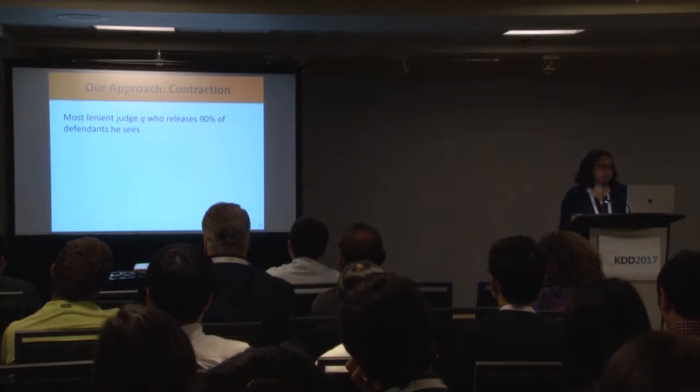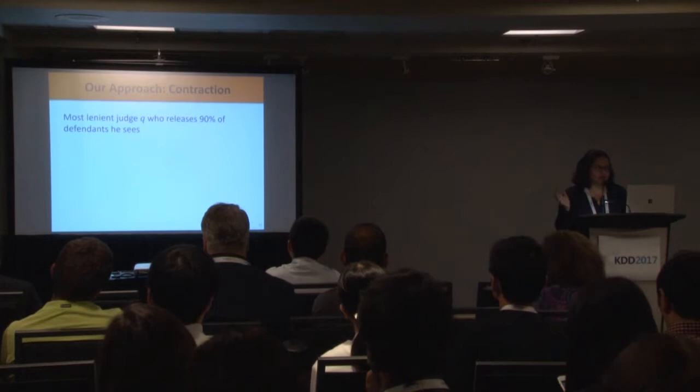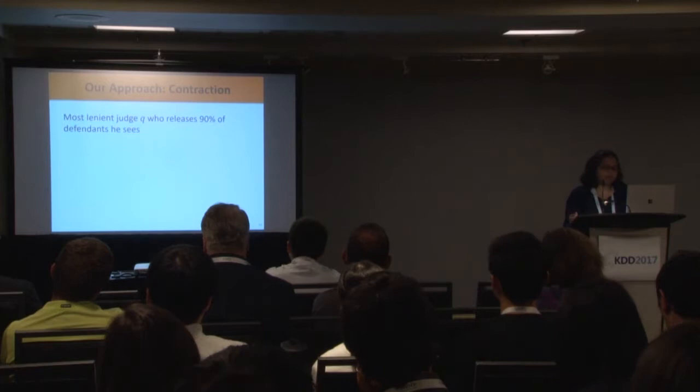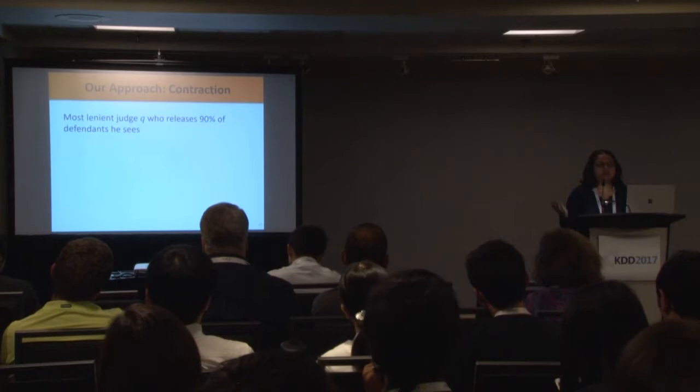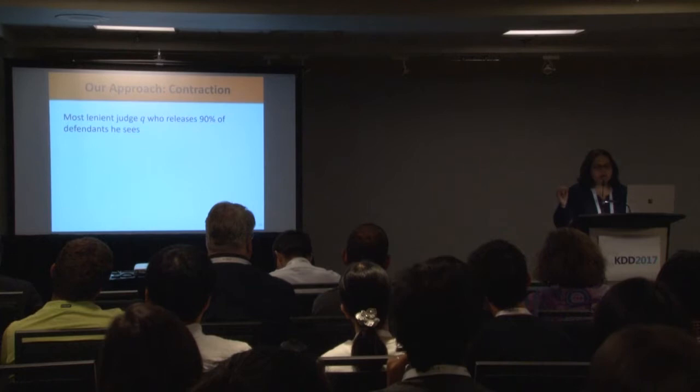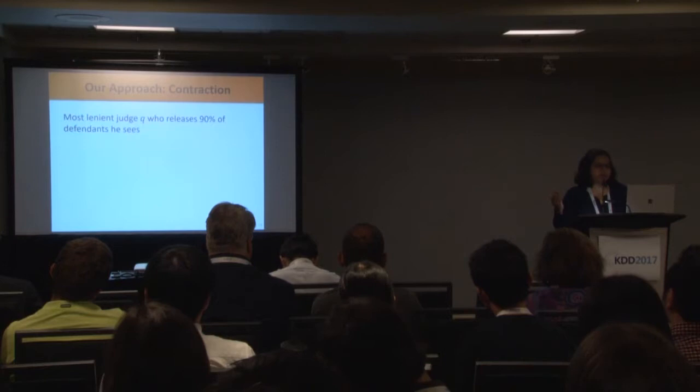For this, we propose an approach called contraction. This approach is simple and elegant, and also addresses the subtle challenges I talked about. We look at the most lenient judge — the person who releases the highest fraction of defendants. This already pushes the selective labels problem further, because this person has a dataset that is more heavily labeled compared to others.